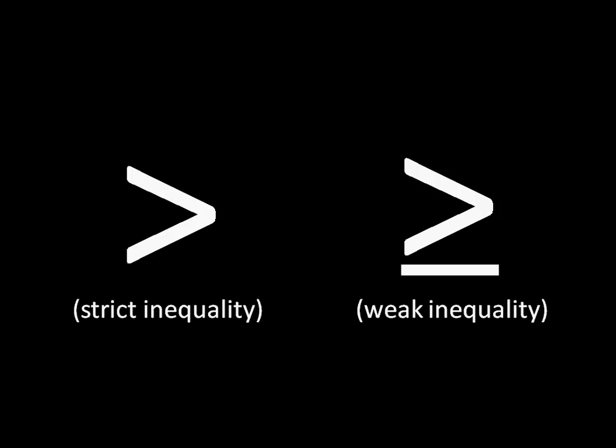So with strict dominance, we're using a strict inequality, and with weak dominance, we are using a weak inequality. And that's how we get the names strict dominance and weak dominance. We get them directly from those inequality signs.